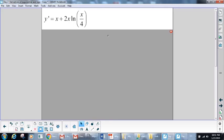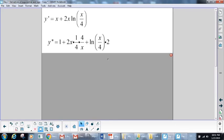So we know this was our derivative. Our next step is to take the second derivative. The derivative of x is 1, and now we have another product rule. First times the derivative of the second. Once again, the derivative of this would be 1 over x over 4, which is 4 over x. And then by the chain rule, we multiply by the derivative of this, which is 1/4, plus the second times the derivative of the first.